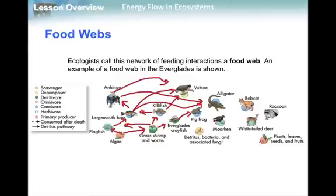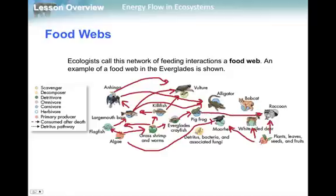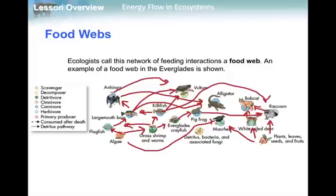We could add even more interactions. The moorhen could be eating some of the algae as a herbivore. A white-tailed deer could be eating these plants. The raccoon is an omnivore, so it could be eating algae, as well as a frog, and potentially a fish. A bobcat might eat the deer or the raccoon, and there's some potential the alligator could have interactions there too. Notice it is a lot more complicated than the simple food chain — we have all these different interactions going on.